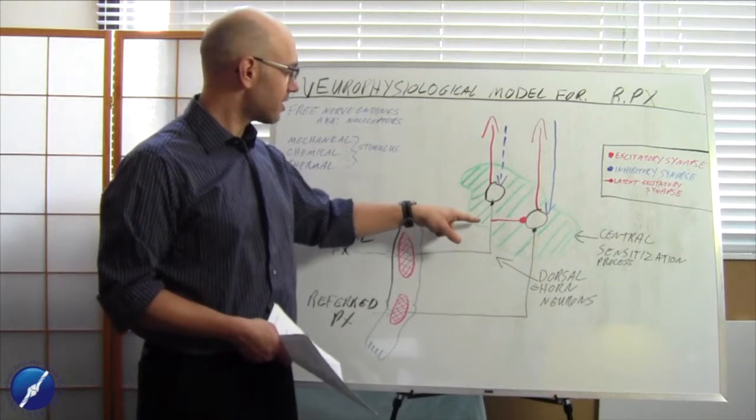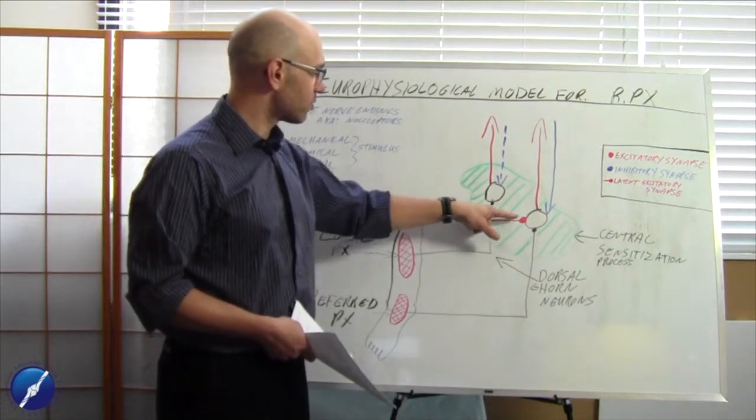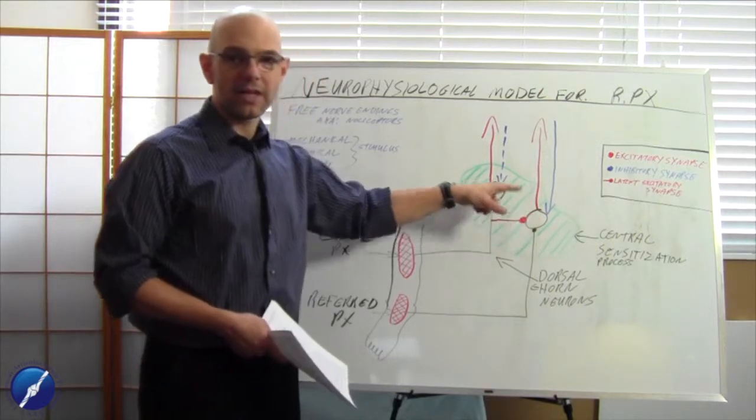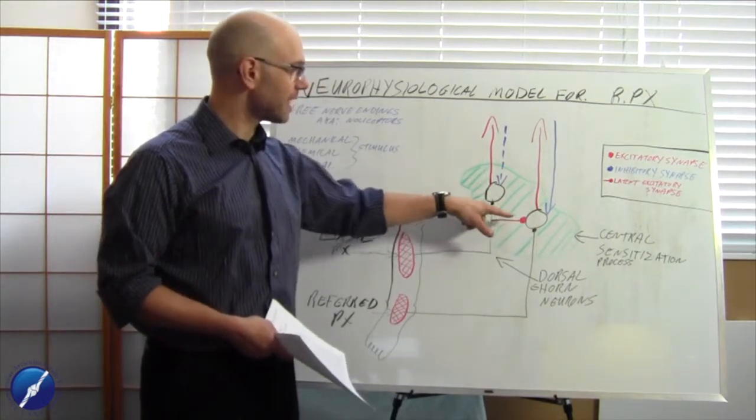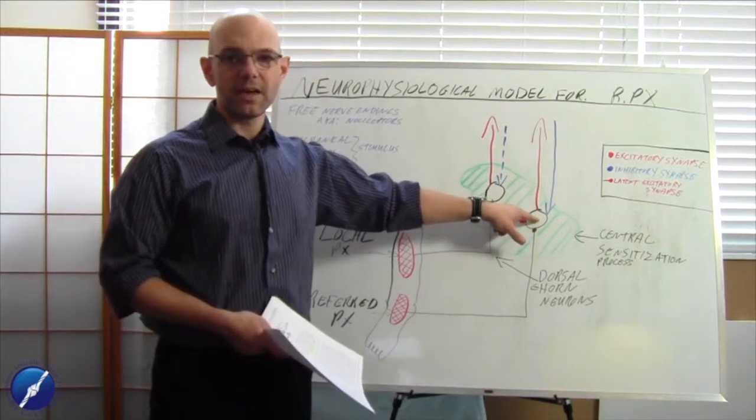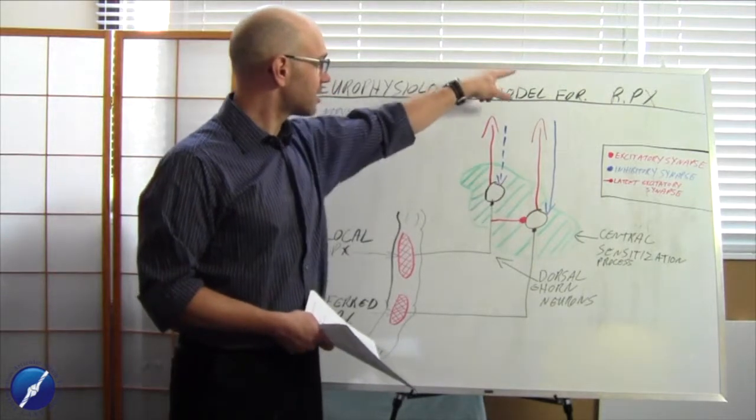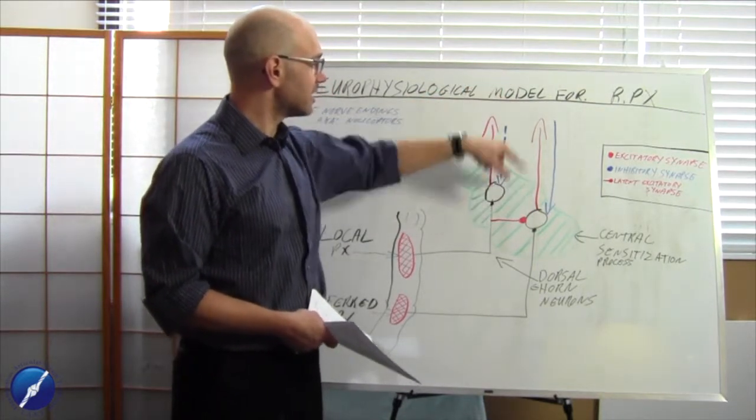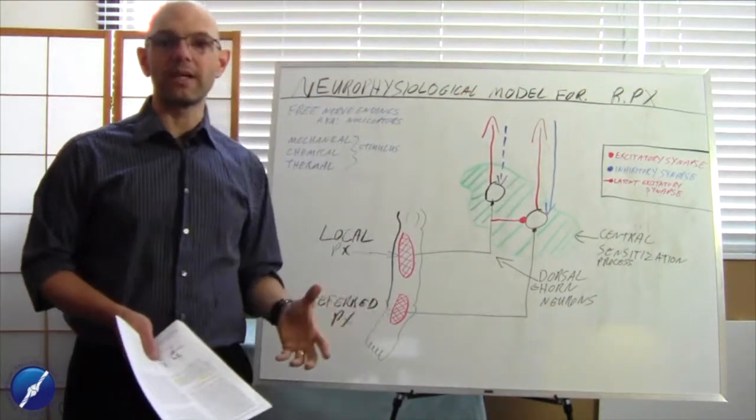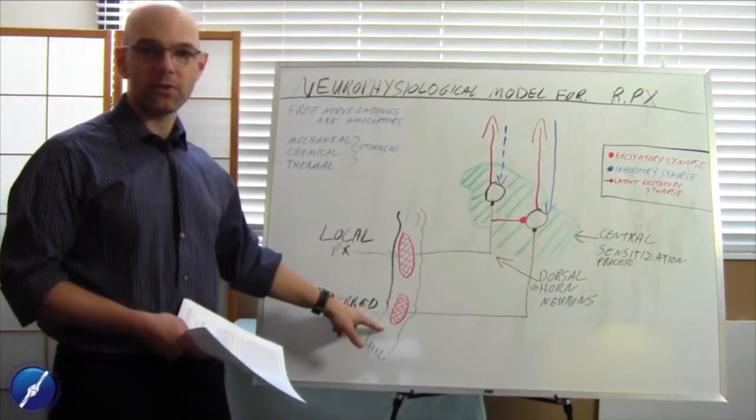The other thing that occurs is that there is a latent excitatory synapse that connects one dorsal horn to the other and it takes a little bit of time for that synapse to send a message over to the second one. Now that second dorsal horn neuron also sends an excitatory synapse, a message, a danger message up to the primitive brain and it gives you the perception of having that referred pain.